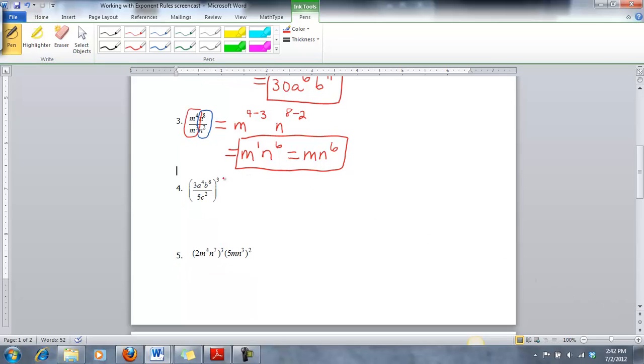Problem number four is similar, but I don't see any common variables in here. I see an a, I see a b, and I see a c. So all those variables are different. But what I do notice on this one is there is a power on the outside. So now we've got to go to our next rule. This one actually combines two of them together. Where you have to distribute this power through. That means it's going to go to the three, the a to the fourth, the b to the sixth, the five, and the c squared. And I also have to then use the rule that when I have a power to power, I multiply those numbers.